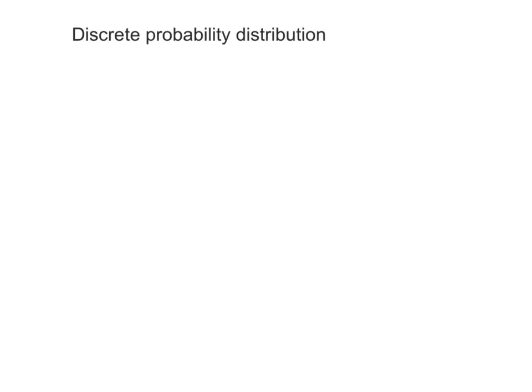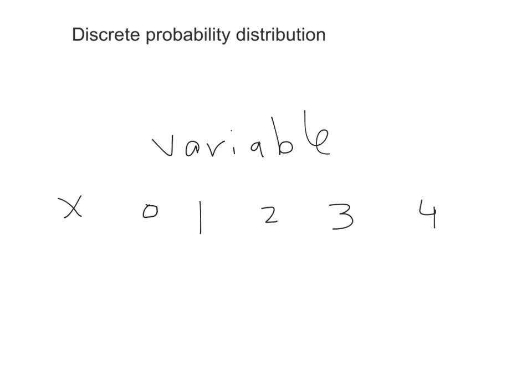In this video I would like to talk about discrete probability distributions. I'll start by reminding you what a variable is — a variable is something that changes from one member to another. For example, how many mobile phones do you have? Some of you have one, some have two, some have three. Suppose the maximum number of mobile phones a student has is four, and some students don't have any at all. That's my variable X.